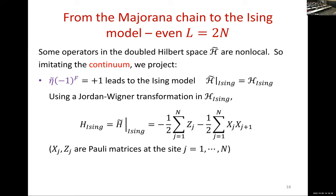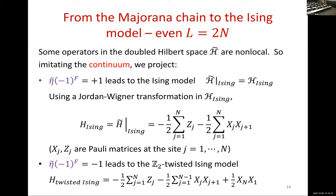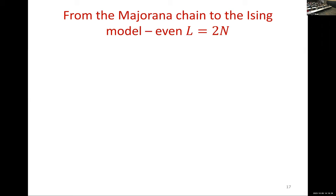Using the Jordan-Wigner transformation, we can exactly rewrite the Hilbert space and the Hamiltonian using Pauli matrices σ^x and σ^z at each site. Notice that the number of sites is half what it was before because we group the fermions into pairs. This is an exact change of variables. We can also project with the other sign, which leads to the Ising model with a Z2 defect. Now let's discuss the symmetries in more detail.